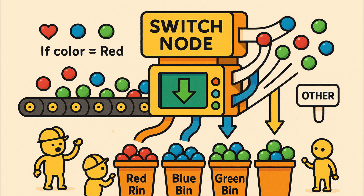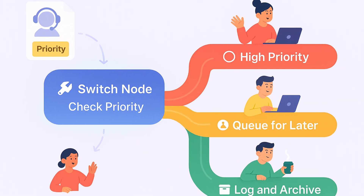For a real world example, imagine you have a sorting machine for candies. Red candies go in the red bin, blue candies go in the blue bin, green candies into the green bin. The switch node does that kind of sorting for your workflow data based on the value or condition. For example, suppose you get a support ticket with a field called priority that can be high, medium, or low. With the switch node, you can automatically route high priority to one branch, medium to another, and low to a different path, all within one node.